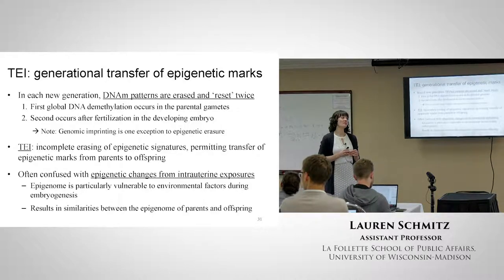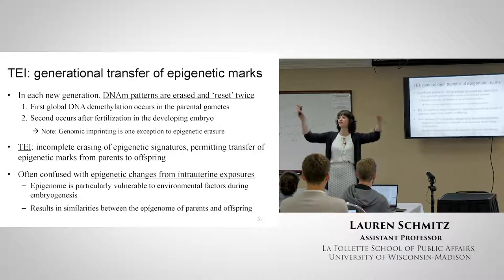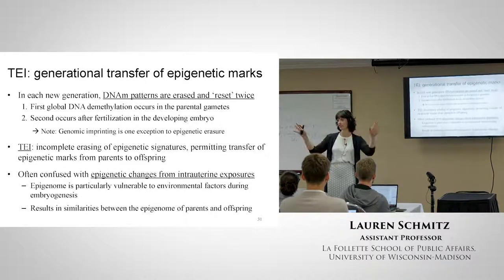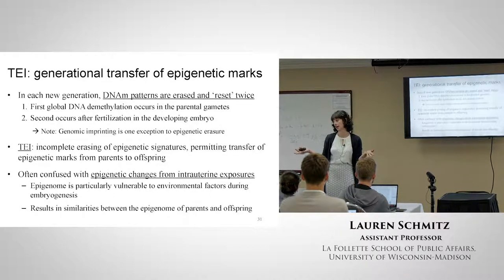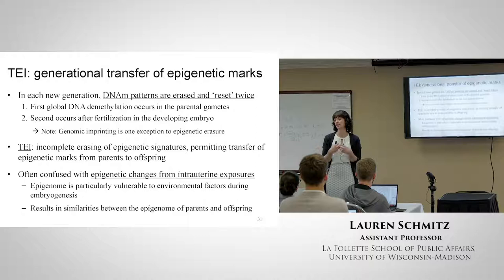Twins tend to be more similarly epigenetic at birth, but then they often show divergence in their epigenomes over time - which has been attributed to epigenetics. Genetically identical twins can look very different over time, and that divergence in their methylomes has been shown in studies.